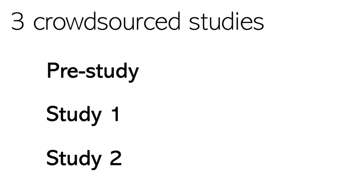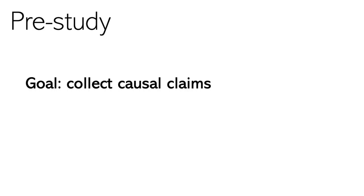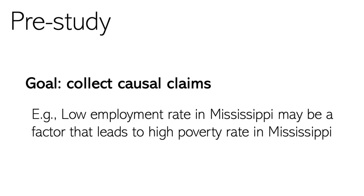To address these questions, we conducted three crowdsourced studies. As a first step, we conducted a pre-study to collect causal claims with different levels of plausibility. A causal claim may be something like: low level of employment rate in Mississippi may be a factor that leads to high poverty rate in Mississippi.